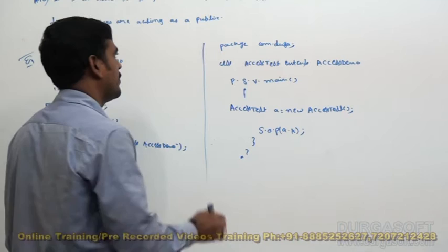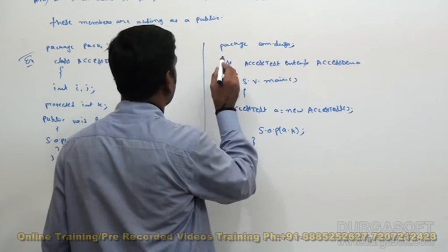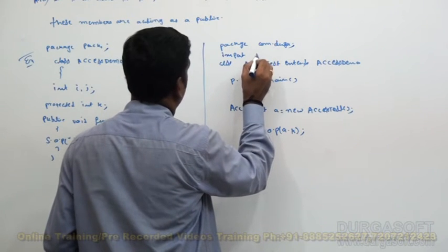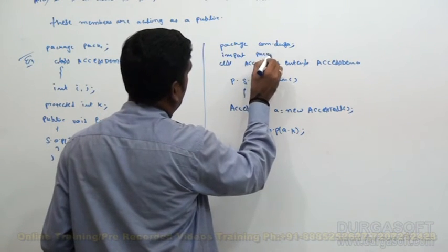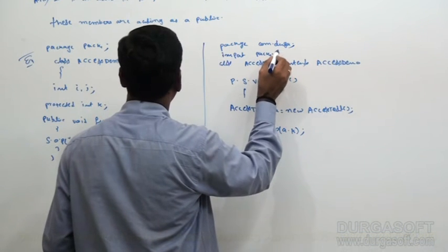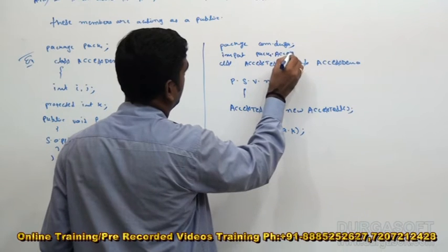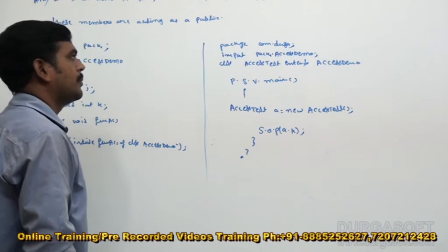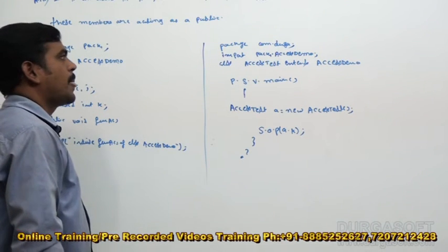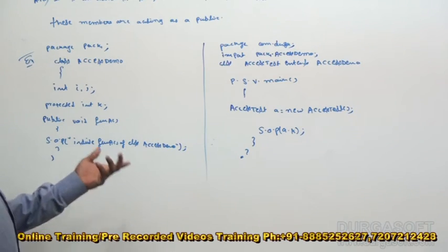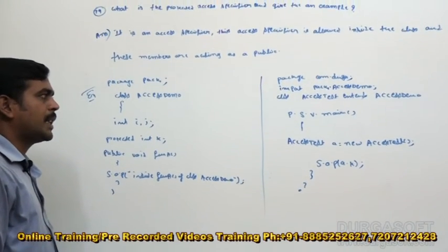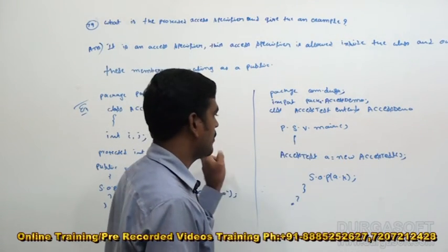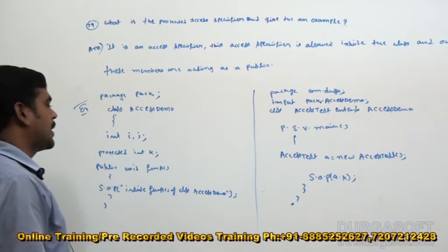Then only that k is going to be acting as public. Otherwise it is also private. If you want to import this class here, we need to import it using the import keyword: import pack1.AccessDemo. Like this we can create another class and access these protected members. Directly creating AccessDemo object will not allow accessing the protected variables.